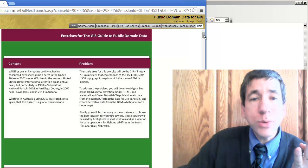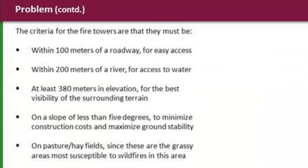What we will need to do now is use the following criteria to site our wildfire observation towers: they have to be within 100 meters of a roadway for easy access, within 200 meters of a river for access to water, at least 380 meters in elevation for the best visibility, on a slope of less than 5 degrees to minimize construction costs and maximize ground stability, and on pasture or hay fields since these are the grassy areas most susceptible to wildfires in this area.